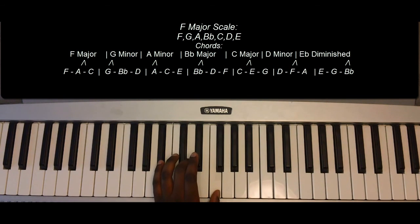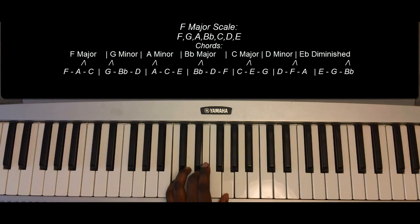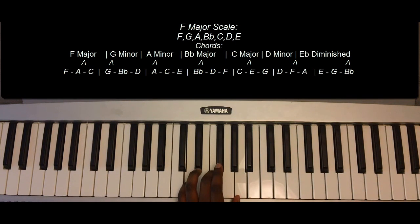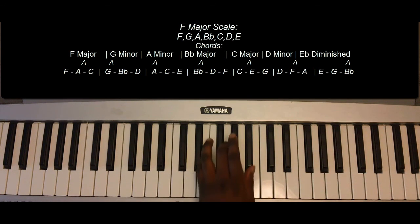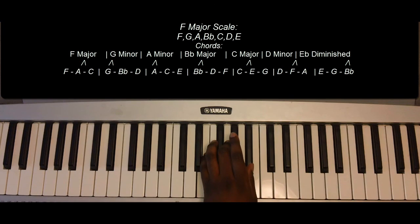Bb major — Bb, D, F. C major — C, E, G. D minor — D, F, A. E diminished — E, G, Bb.